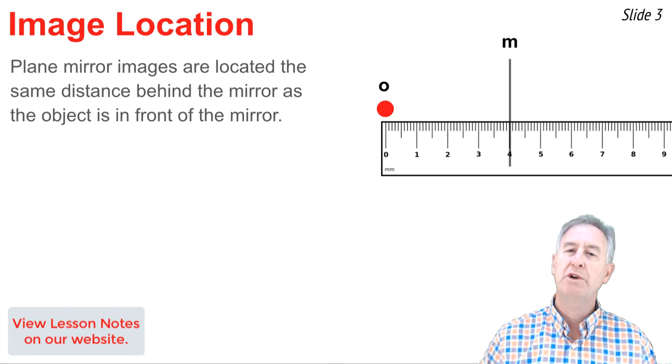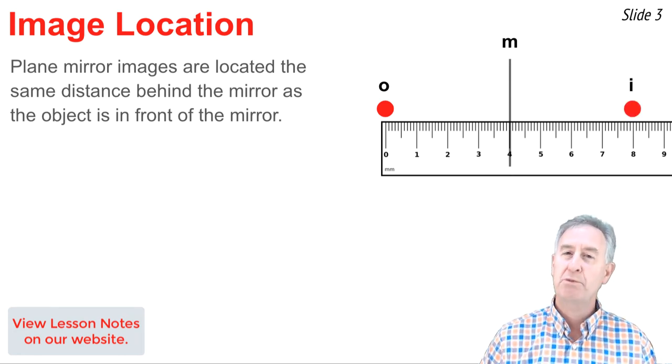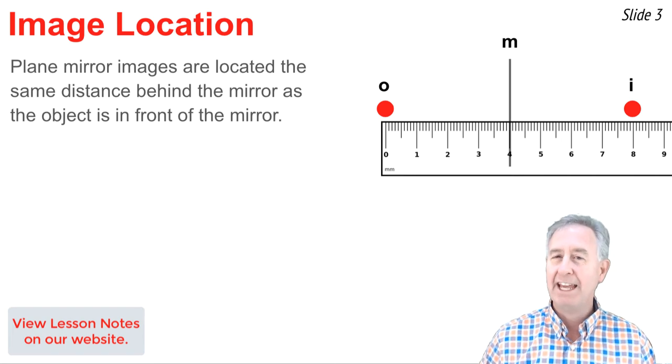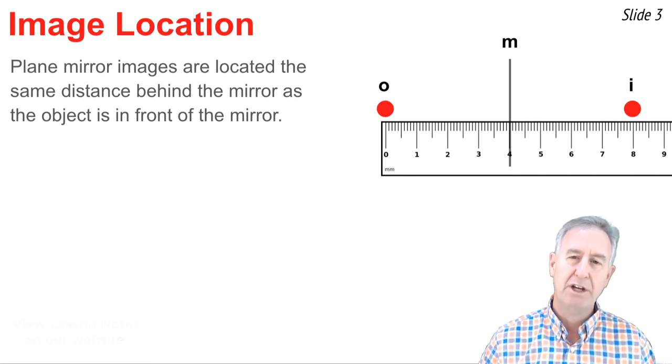When I put my ruler down, I'm going to measure from the center of the object to the mirror, and it ends up being about 4.0 centimeters. I measure out the other side the same distance. I draw my image in at the 8 centimeter mark, 4 centimeters from the mirror, and I've found the image of the object.